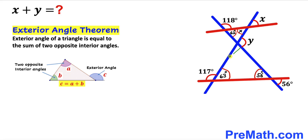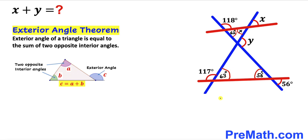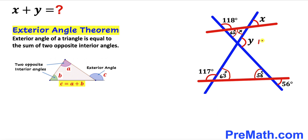Now we are going to focus on this triangle. We can see that angle y is our exterior angle, and it is equal to the sum of the two opposite interior angles: 56 degrees and 63 degrees. So angle y equals 56 degrees plus 63 degrees, which gives us y equals 119 degrees.